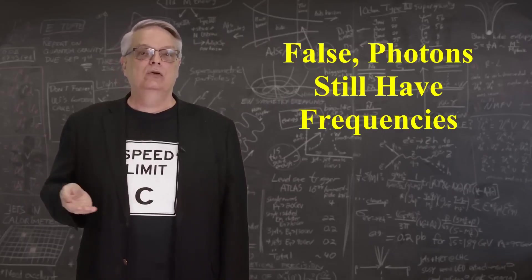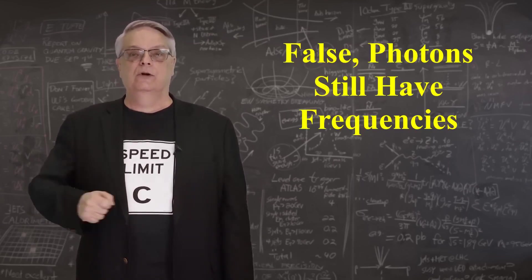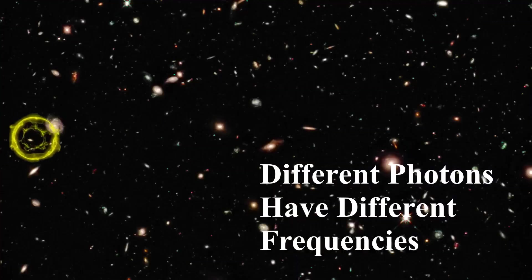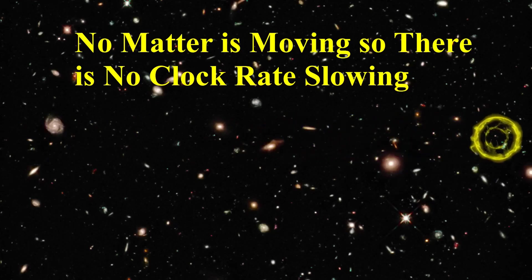From this, we can conclude that in the limit of going at the speed of light, that a photon will experience zero time. So that's pretty wild. Well, taken to an extreme, this means that a photon can cross the entire universe in zero time.